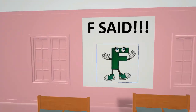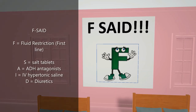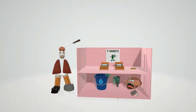Let's end off with treatment. The sign spells out FSAID to help remember the treatments: F is for fluid restriction — that's first-line treatment. S is for salt tablets. A is for ADH antagonists such as conivaptan, tolvaptan, and demeclocycline. I is for IV hypertonic saline. D is for diuretics. I hope you enjoyed this incredibly weird scene on SIADH — stay tuned for our next video, please subscribe, leave your comments, and take care.